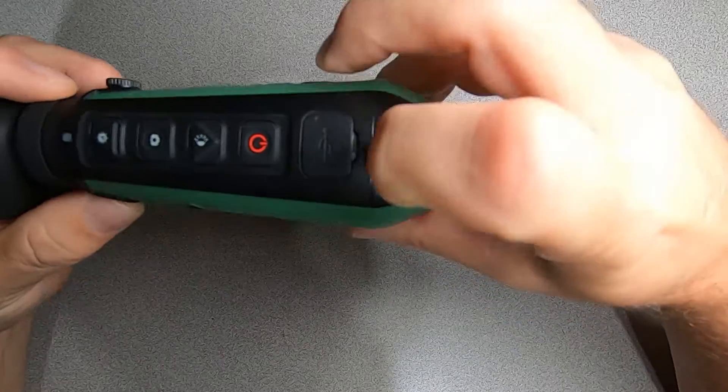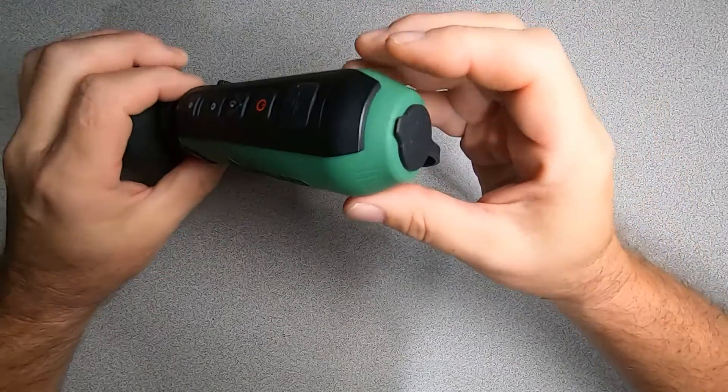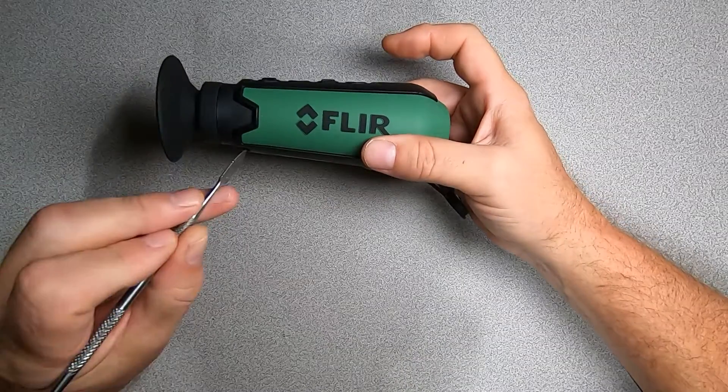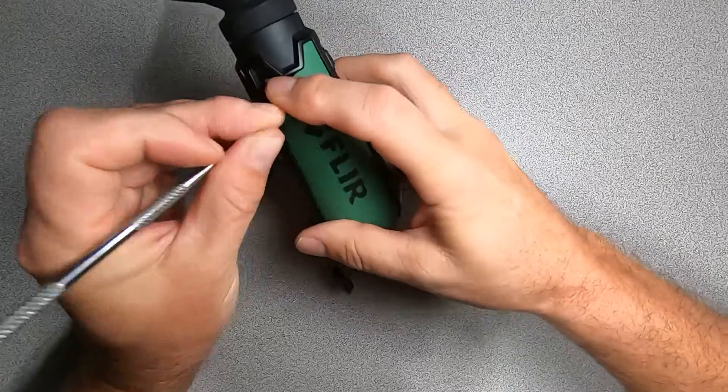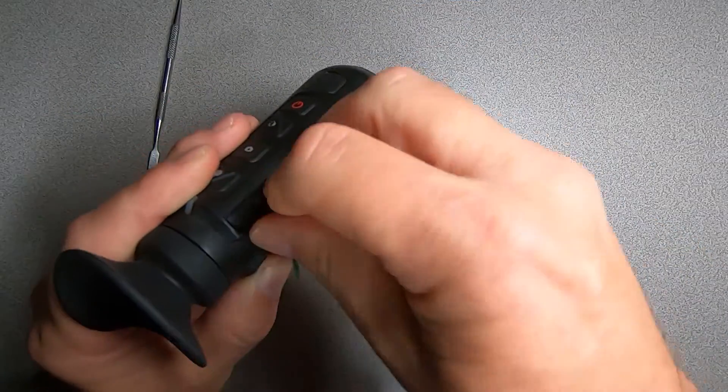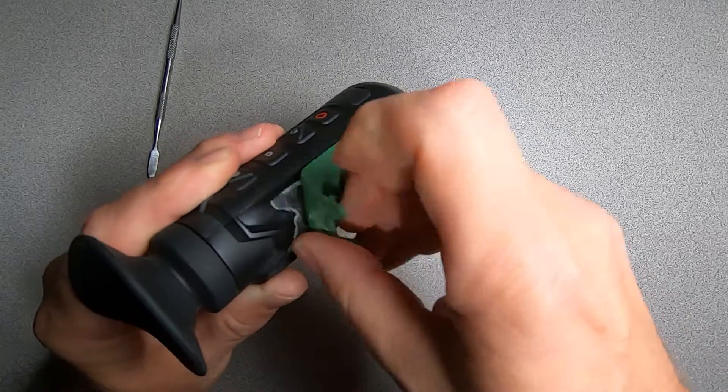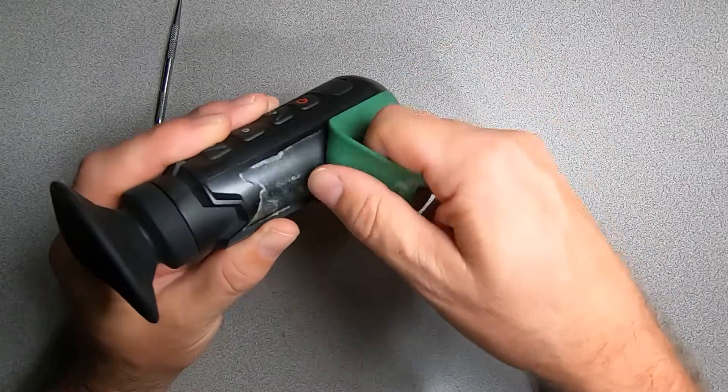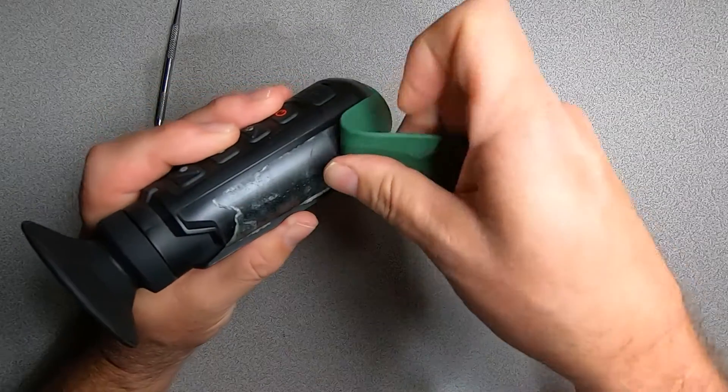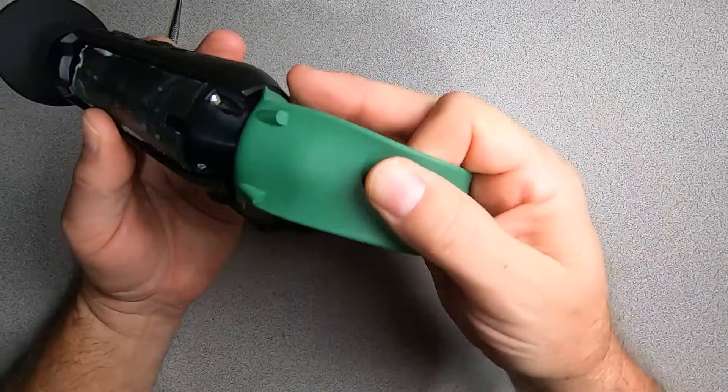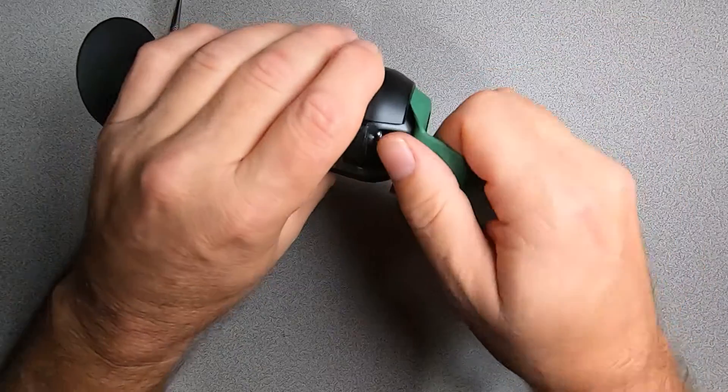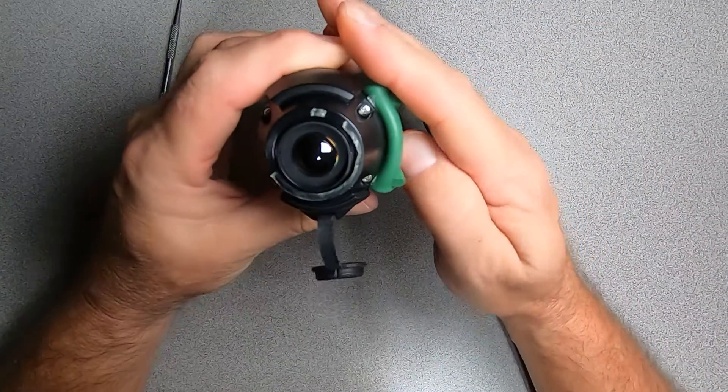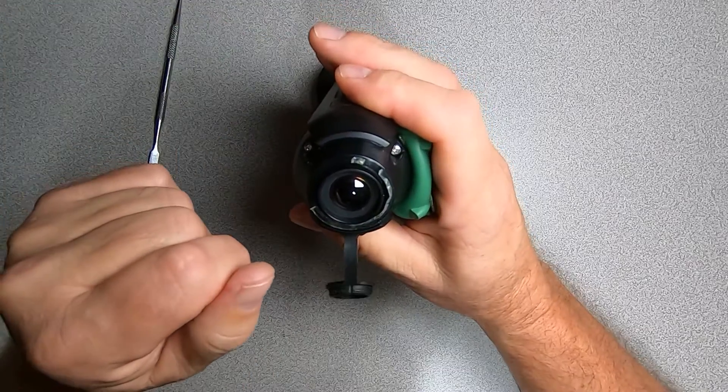The device itself, you can see there's a seam here, so we're going to have to open it from the front. There should be some screws hidden underneath this rubber over-molding, so let's go ahead and get this over-molding out of the way. You can see it kind of pulls back, and there's our screws right there. That's as much as we need to take out.